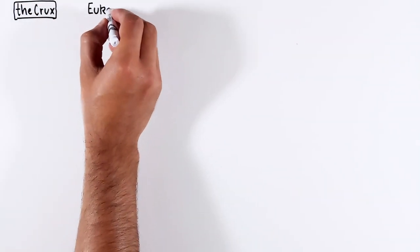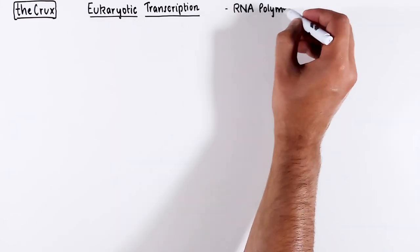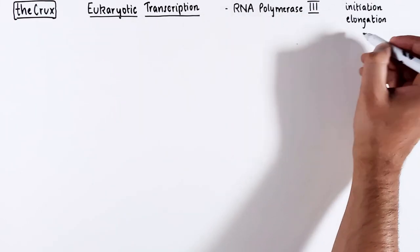RNA polymerase 3 transcription in eukaryotes remains underappreciated. In this video, I will simplify the process by discussing the three fundamental steps.